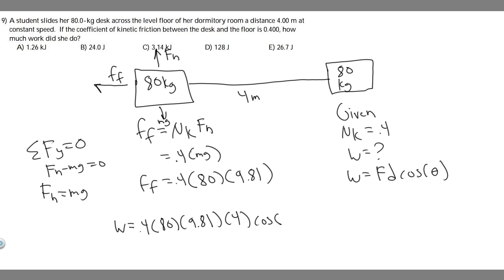Well, really it would be 180 because it's in the opposite direction, but in this case they are just asking for the positive value of it. You're just going to do 0.4 times 80 times 9.81 times 4, and you're going to take the magnitude essentially.